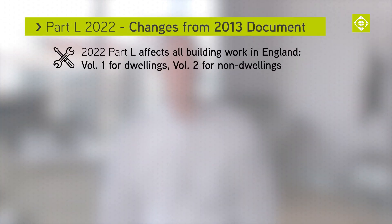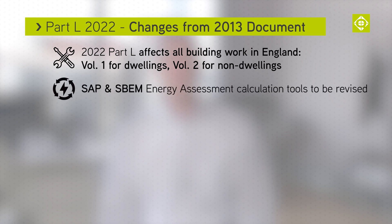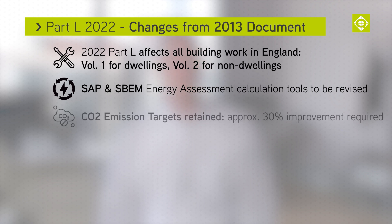Volume 1 covers dwellings and Volume 2 is for buildings other than dwellings. The SAP and SBEM energy assessment calculation tools will also be revised. CO2 emission targets will be retained but approximately a 30% improvement will be required.